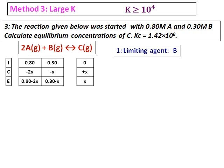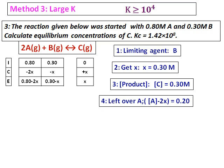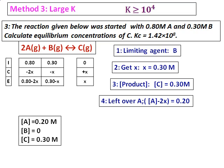Since the value of K is very large, all of B will be consumed. Whatever B gets consumed, an equal amount of C is formed, so x equals 0.30 molar and the concentration of C equals 0.30 molar. The stoichiometric ratio is 2:1, so if 0.30 moles of B is consumed, 0.60 of A is consumed, leaving 0.20 molar A. At this point, assuming the reaction proceeds completely to the right, the concentration of A is 0.20, concentration of B is 0, and concentration of C is 0.30 molar.